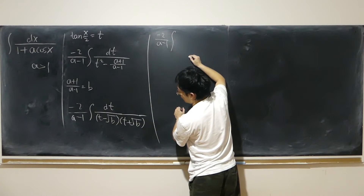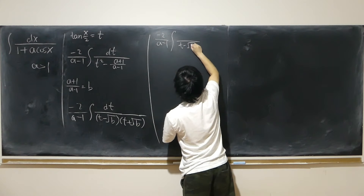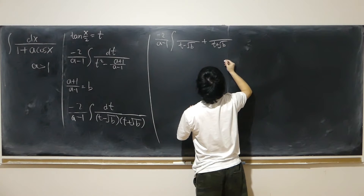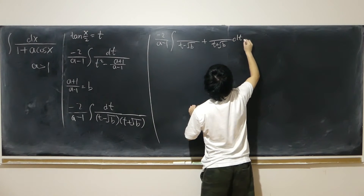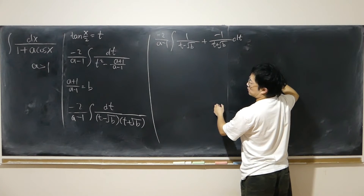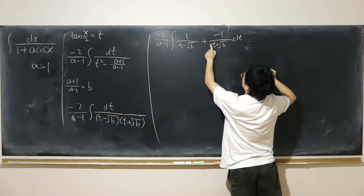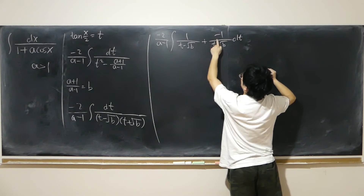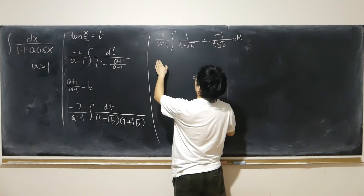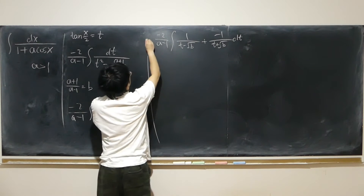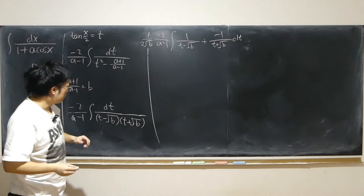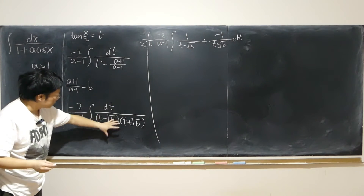I write 1 over [(t minus sqrt(b))(t plus sqrt(b))] using partial fractions. Putting 1 and negative 1 in the numerators: t plus sqrt(b) minus t — the t cancels — giving twice sqrt(b), so I divide by that. This gives exactly 1 on the top for each partial fraction term.